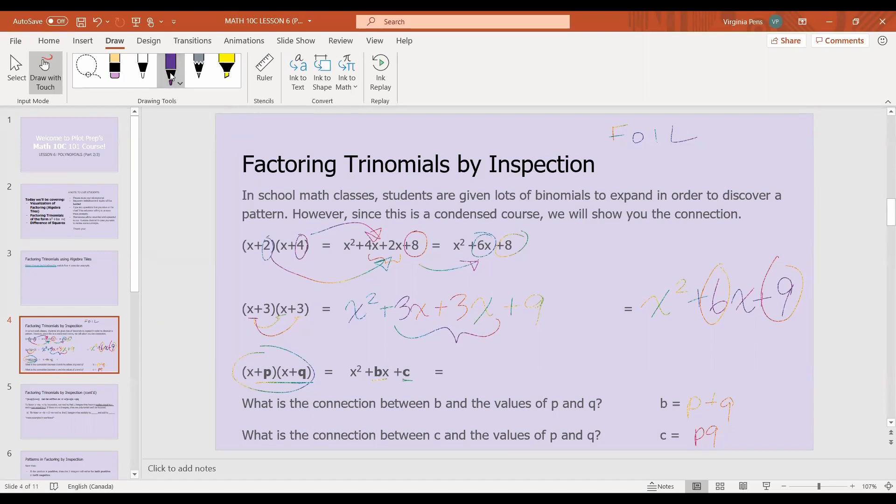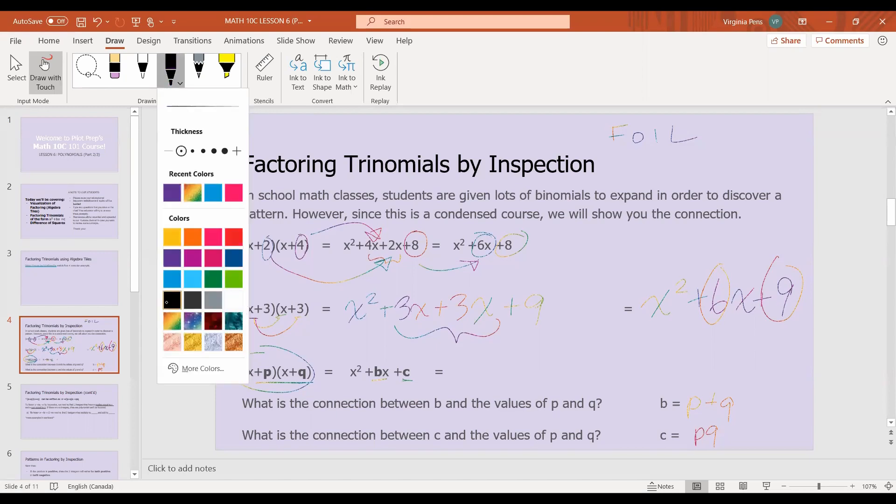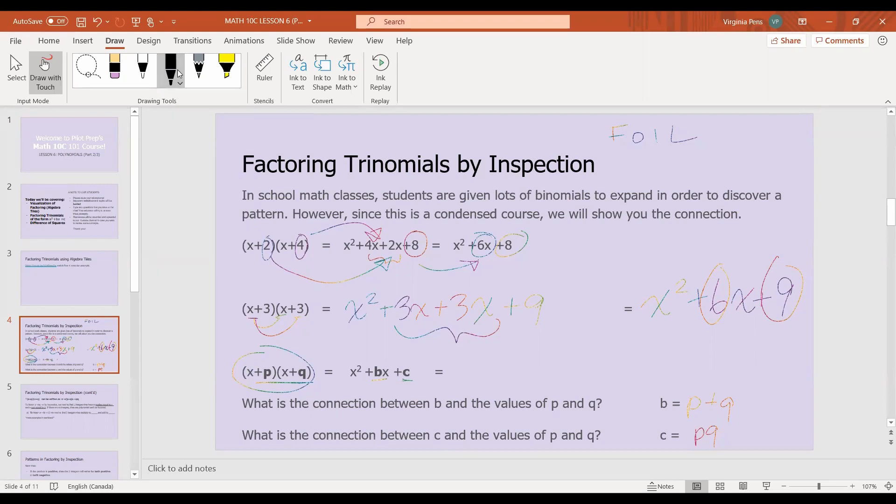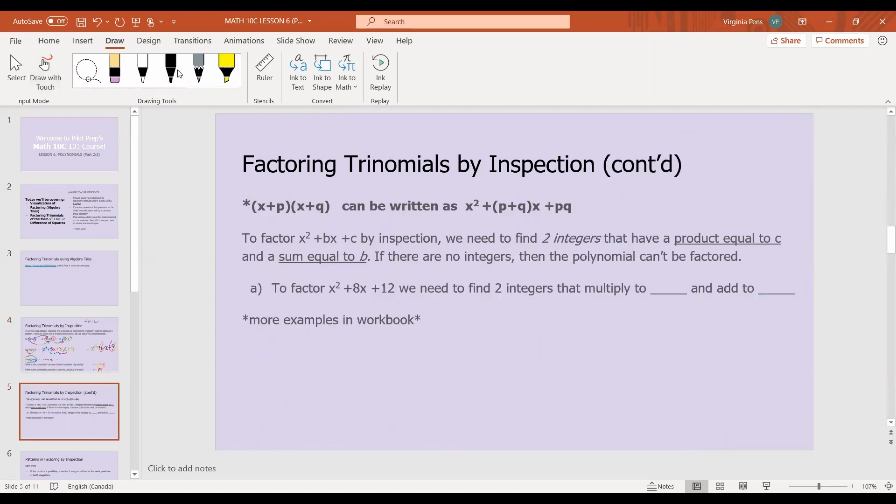So I'm going to write it down here, b is equal to p plus q. And c is equal to p times q. So now let's kind of use this newfound pattern to easily simplify our expressions. So basically, to sum it all up, if we want to factor x squared plus bx plus c, where b and c are some random integers, by inspection, we need to find two integers that have a product that is equal to c and a sum that's equal to b. If there are no integers, then the polynomial can't be factored.